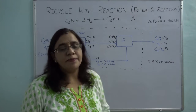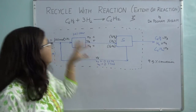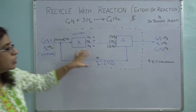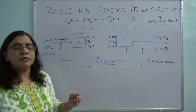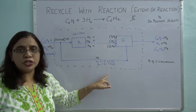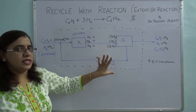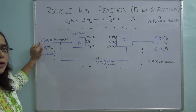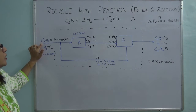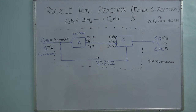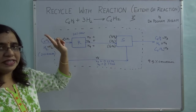Now to start this problem, you have to first choose a basis. You have the option of two streams: the feed, or the recycle stream, since you know the composition of both. While solving this problem, I am taking the basis as the amount of benzene which is going in. So I am choosing the basis as 100 moles of benzene.